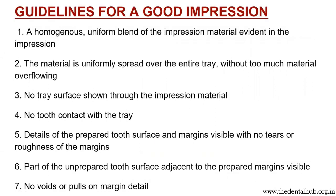So what should a good impression contain? The good impression material should be homogeneously and uniformly blended. The material should be uniformly spread over the entire tray without too much material overflowing. No tray surface should be shown through the impression material. There should be no tooth contact with the tray. Details of the prepared tooth surface with margin should be visible. Part of the unprepared tooth margin adjacent to the prepared margin should be visible. No voids or pulls on margin detail.